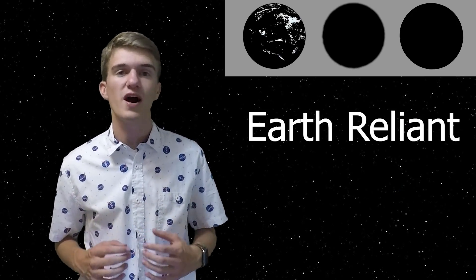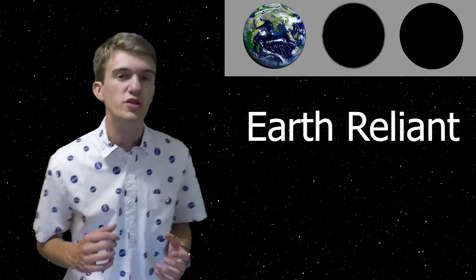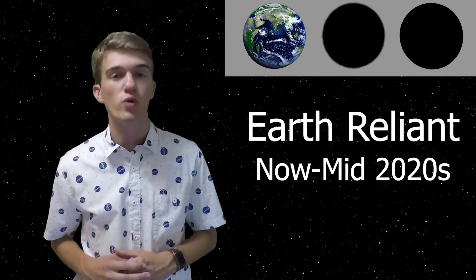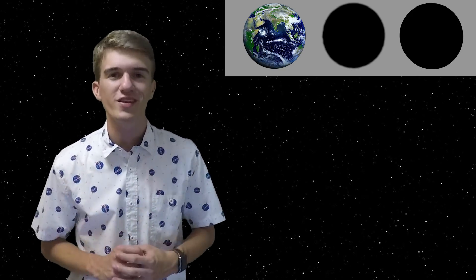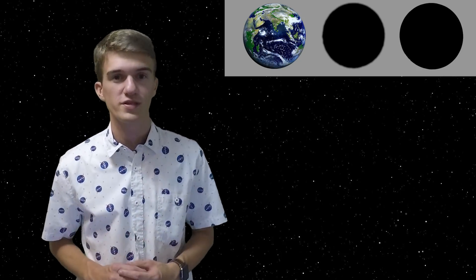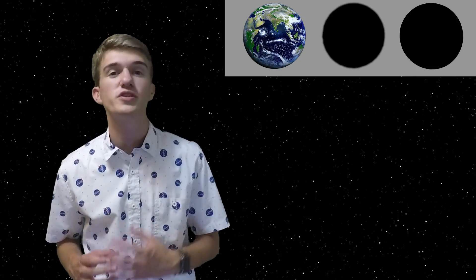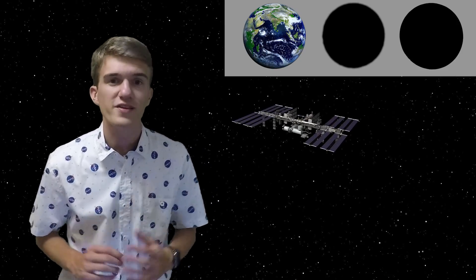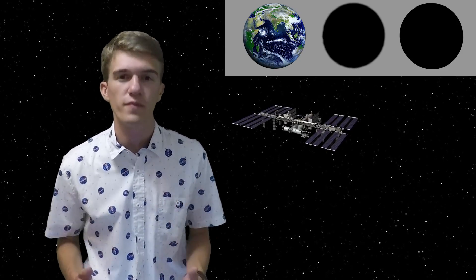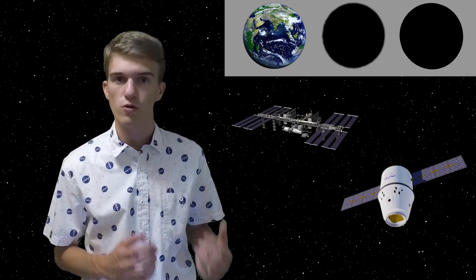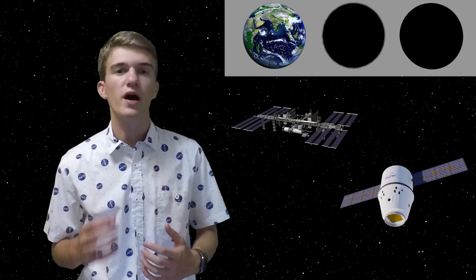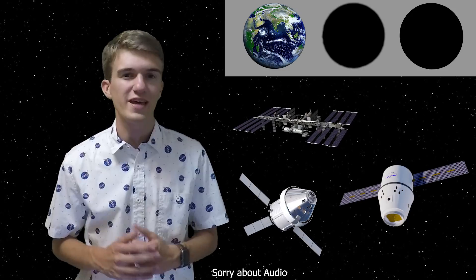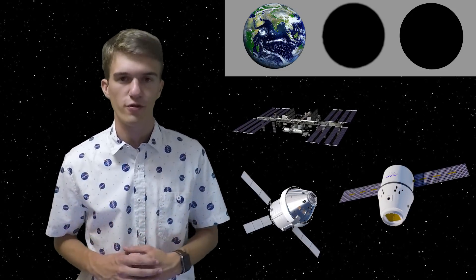Let's go ahead and get started with the first phase, which is the Earth Reliant phase, which is supposed to go from now into the mid-2020s. So underneath this phase, we have three separate goals. The first one being the operation of the International Space Station until or through the year 2024. The second one being the commercial development of spacecraft in low-Earth orbit. And the third one being understanding life support systems in deep space around Earth. So first, let's look at the International Space Station.